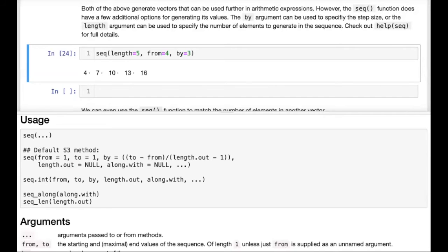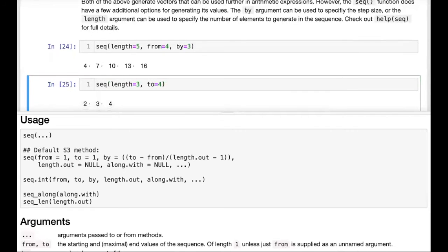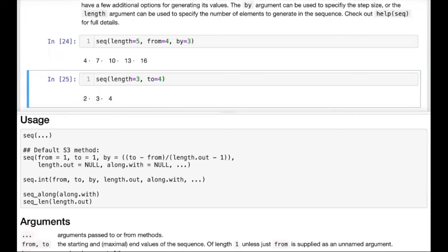Now in all our examples so far, we've specified our starting point, the from argument. But the sequence function itself doesn't actually require that. So we can actually omit the from argument and simply write sequence with length 3 and to 4. And we see that the sequence function is smart enough to determine what the starting value should be.